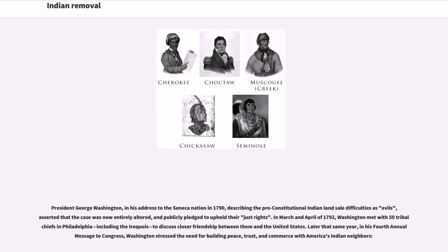President George Washington, in his address to the Seneca Nation in 1790, describing the pre-constitutional Indian land sale difficulties as evils, asserted that the case was now entirely altered, and publicly pledged to uphold their just rights. In March and April of 1792, Washington met with 50 tribal chiefs in Philadelphia, including the Iroquois, to discuss closer friendship between them and the United States. Later that same year, in his fourth annual message to Congress, Washington stressed the need for building peace, trust, and commerce with America's Indian neighbors.